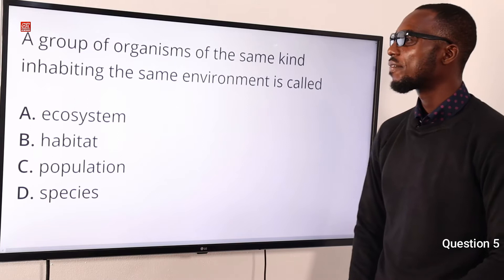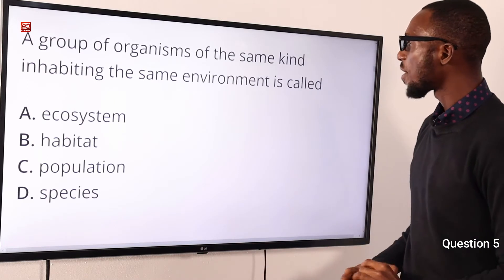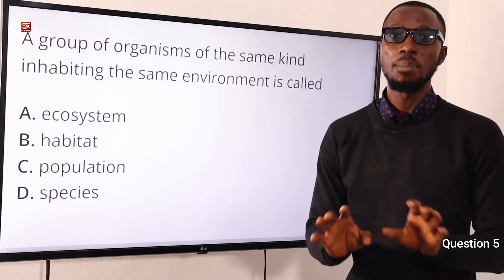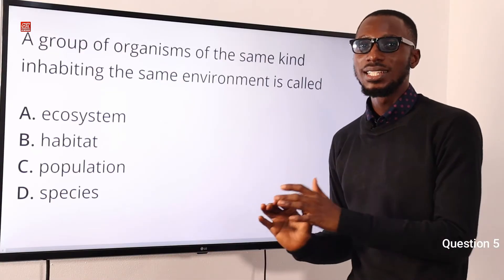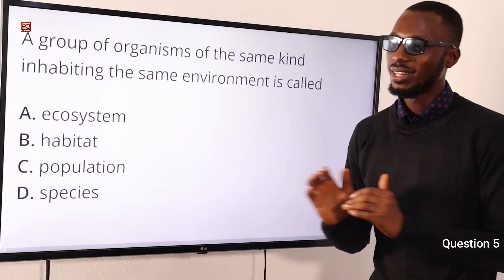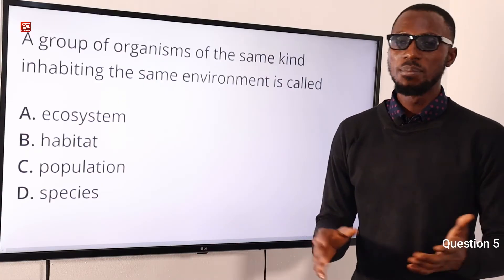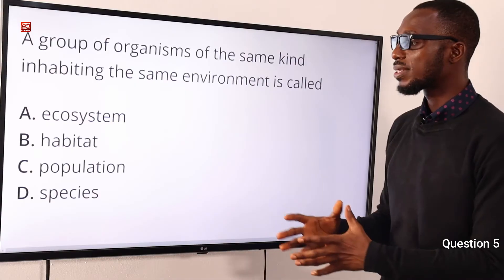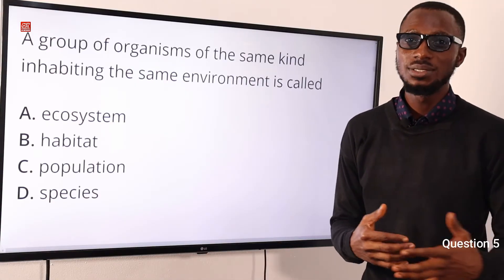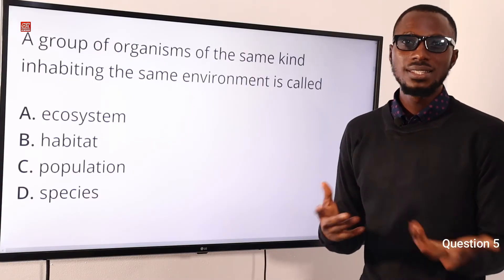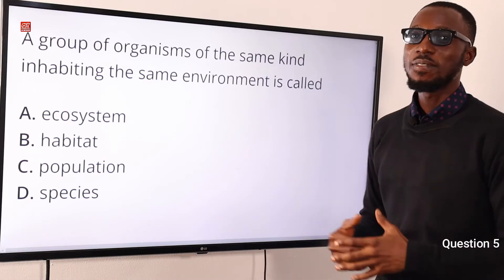Question 5. A group of organisms of the same kind — emphasis: same kind — inhabiting the same environment is called what? That is a population. When you talk about ecosystem, you are considering the biotic and the abiotic components, living and non-living. Habitat is the home where an organism lives. When you talk about species, you are talking about organisms that are closely related, with the same genetic heritage and that can freely interbreed. The correct option is option C for population.